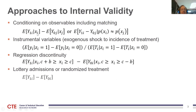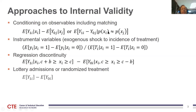Conditioning on observables — running a regression or matching — leaves the problem of selection on unobservables, which is a lot of what was discussed in the last section. Matching techniques are often thought to be better than linear regression, but you're just conditioning on the same variables you'd condition on in a regression, only allowing for some non-linearities. In practice, 20 years of research show those non-linearities usually don't matter much, so matching looks a lot like regression.